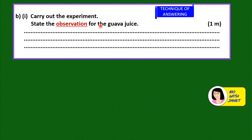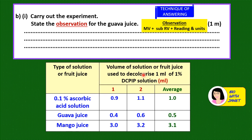Question B1: carry out the experiment and state the observation for the guava juice. Recall the components of an observation: MV + sub-RV + reading + units. The sub-RV is the raw data obtained in this experiment. Think for a moment about what observation you're going to write.